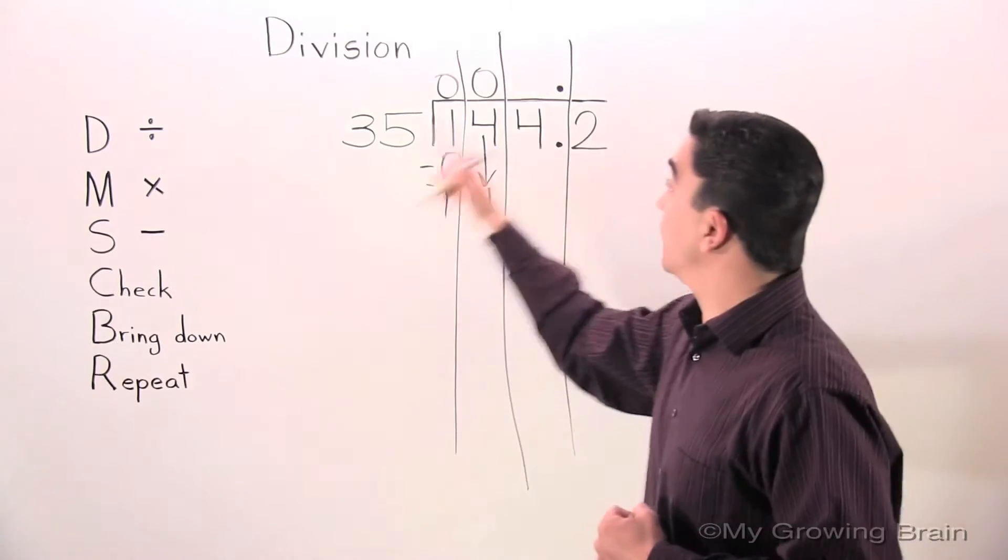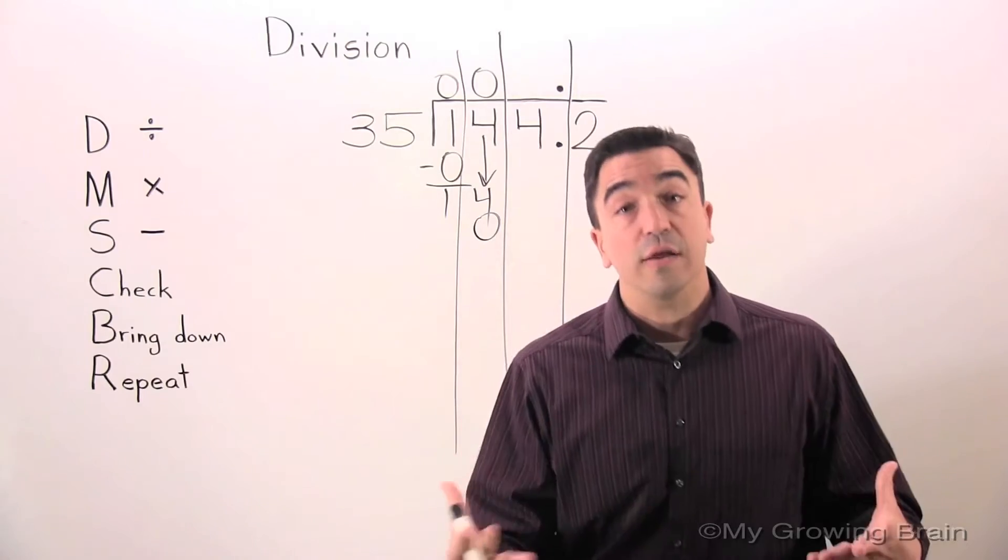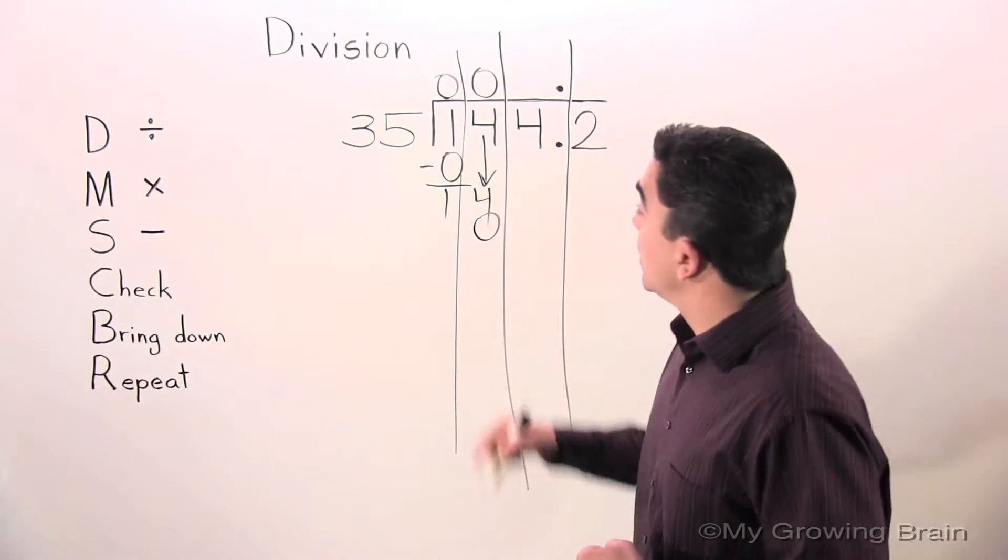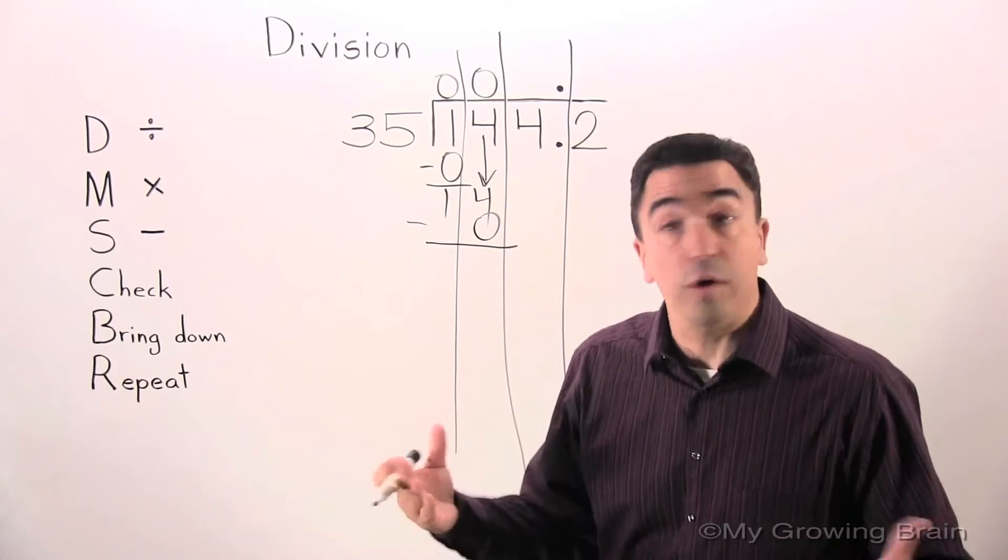Next step: multiply. 35 times 0 is 0. Next step: subtract. 14 minus 0 is 14.